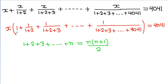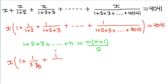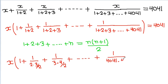So here we can write this as x times: 1 plus 1 by (1 plus 2), which can be written as 2 into 3 by 2; plus 1 by (1 plus 2 plus 3), which can be written as 3 into 4 by 2. And similarly, 1 by (1 plus 2 plus 3 up to 4041) can be written as 1 by (4041 into 4042 by 2), is equal to 4041.